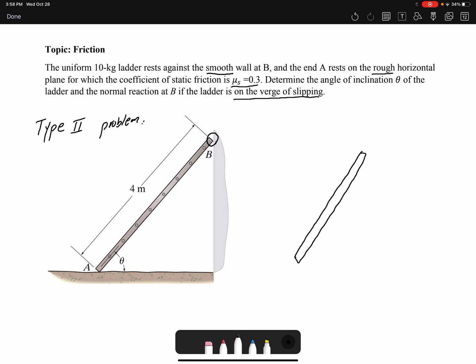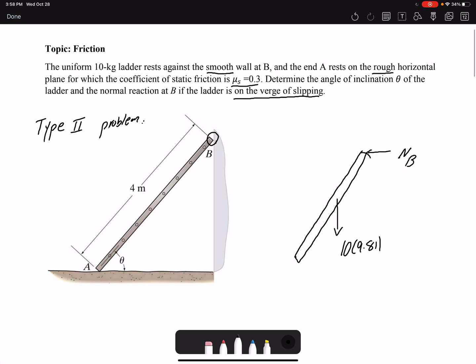The ladder is 10 kilogram and it's acting in the middle. If I multiply the mass by 9.81, I get the weight. At B, I only have normal force because I don't have any friction force—the problem tells me that the wall is smooth. At A, I have both normal force and the friction force. The ladder tends to move to the left, so the friction force would be in the opposite direction.